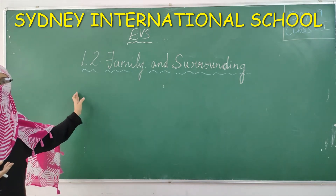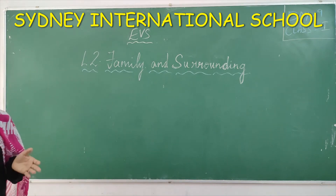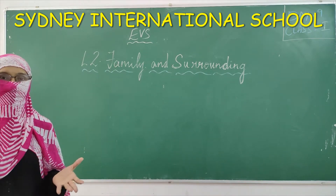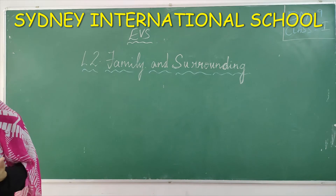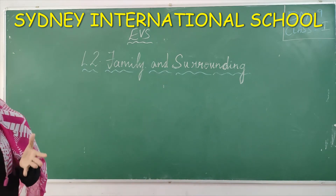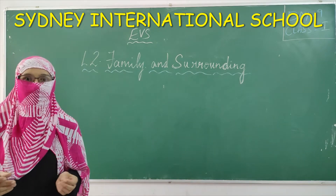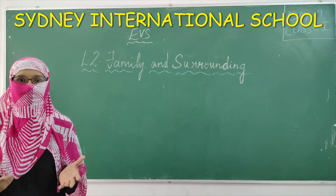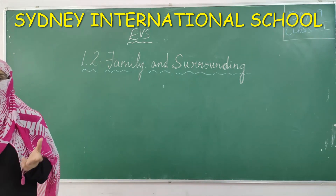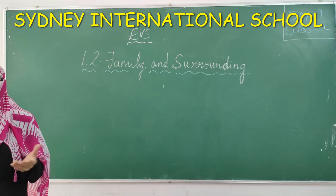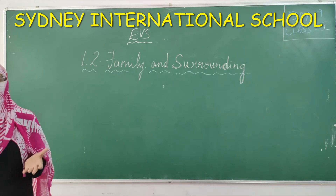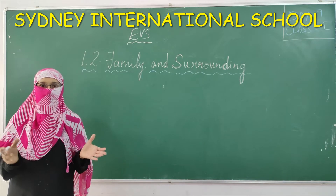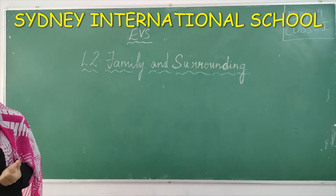Today we are going to start family and surroundings. What is a family? Presently you are at home — who is at your home? You will be telling me: my father, my mother, my brother, my sister. So all these members together make a family. Some children say, besides your father, mother, brother, and sister, some are having an uncle, some are having a grandmother and grandfather.